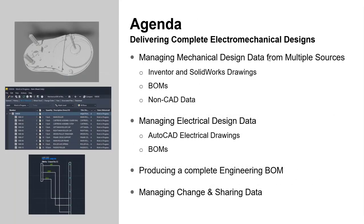Thanks and hello everyone, thanks for joining today. We'll be talking about delivering a complete electromechanical design with Autodesk Vault. We'll be talking about a few aspects of that, starting out with an overview of what I consider a complete design or set of design deliverables. Every company is different in terms of what they provide, but there are generally a few standard things you need to provide in order to describe a design and have somebody build it, assemble it, etc.